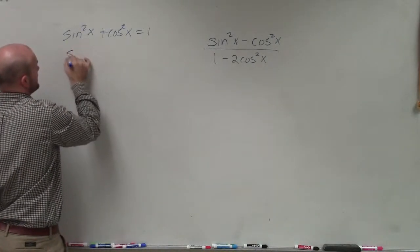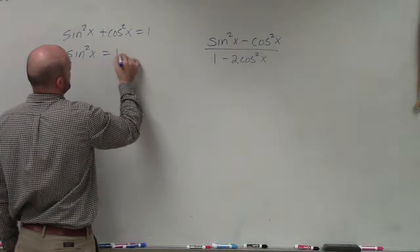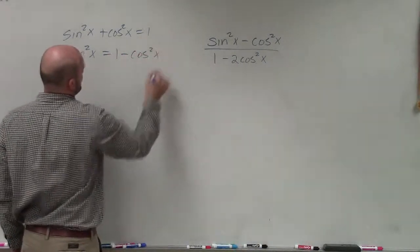Therefore, to solve for sine, I could say that sine squared of x is going to equal 1 minus cosine squared of x.